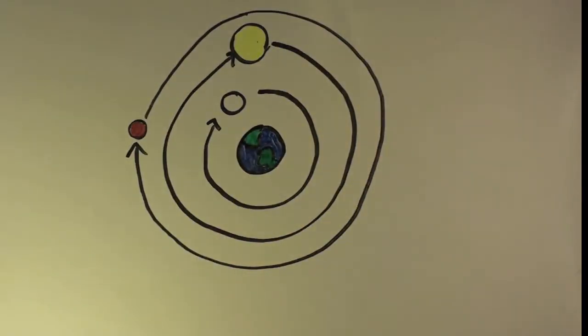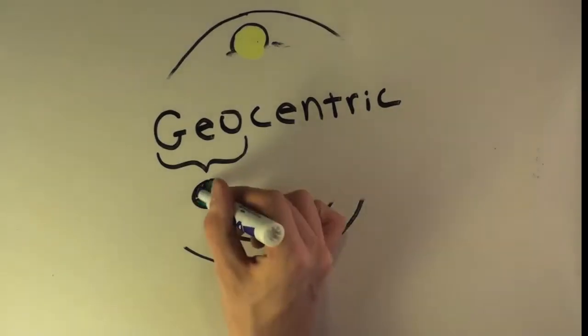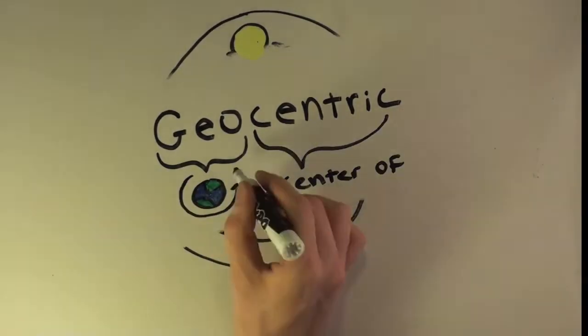This is the first geocentric model. Geo meaning Earth, as in geography or geology, and centric meaning at the center of.